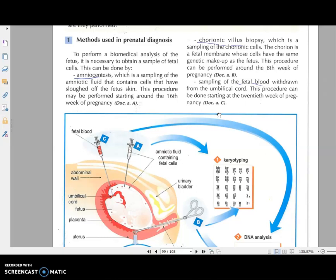The third method is called blood sampling, fetal blood sampling, or sampling of fetal blood, which means that we have to take blood from the fetus. This is the umbilical cord that connects the baby to the mother and it contains fetal blood. We insert a needle and we take blood from the baby, and this is done at the 20th week of pregnancy, which is the fifth month.